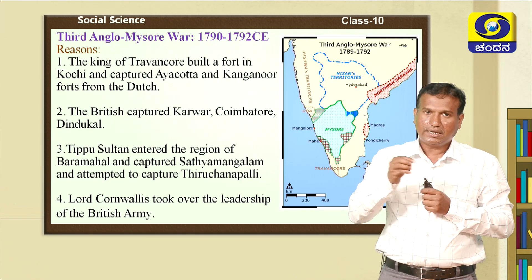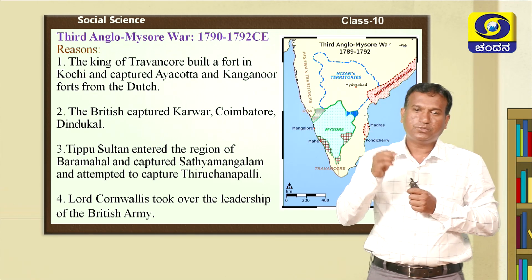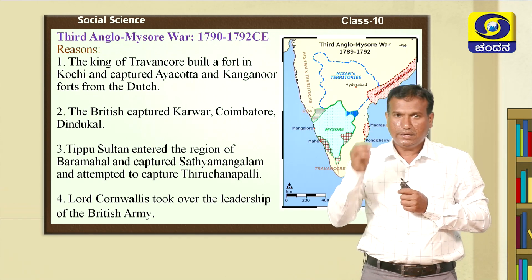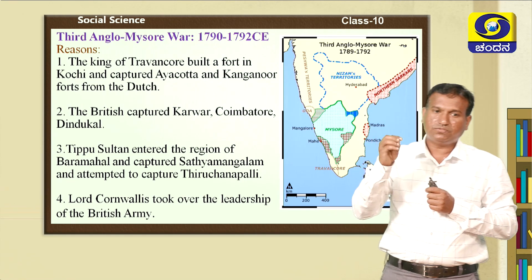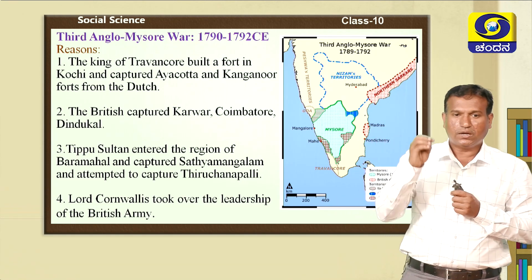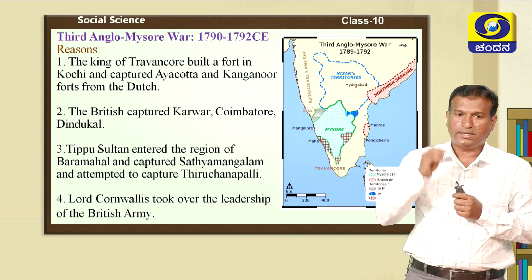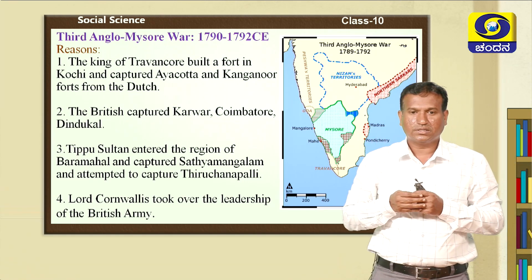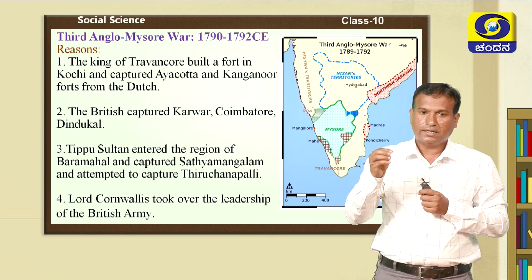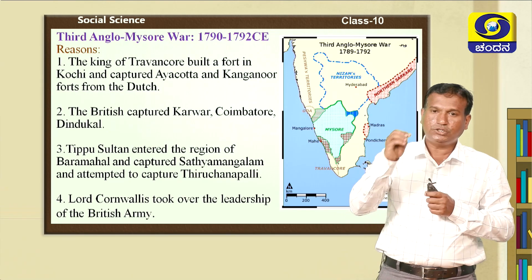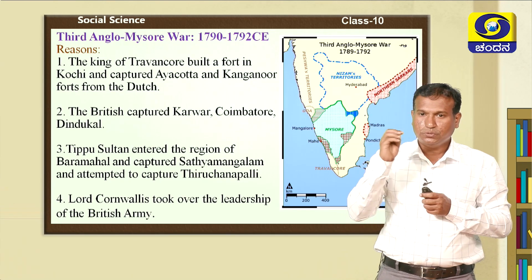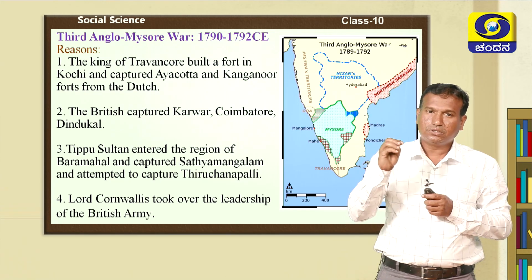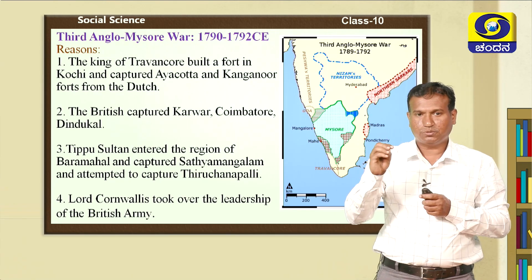Tipu Sultan entered the region of Baramahal and captured Sathyamangalam. After capturing Sathyamangalam, he planned to attack and capture Trichirapalli, but his attempt failed. During the Third Anglo-Mysore War, the English commander-in-chief of the army was Lord Cornwallis.